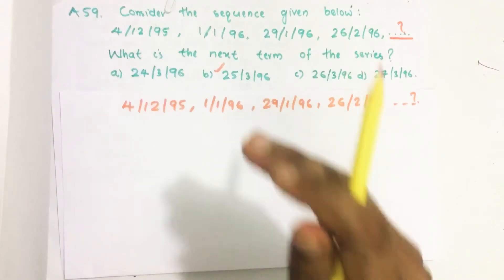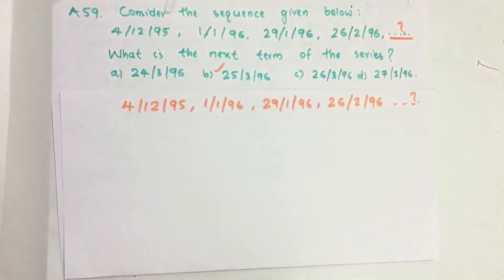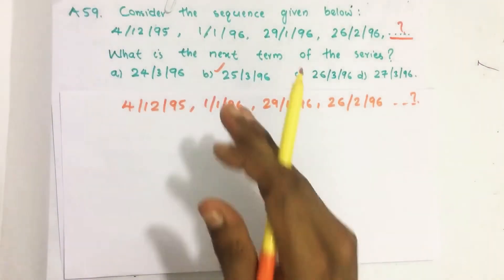So to solve this we have to find the relationship between these numbers. The moment you know these are different dates then it is easy.